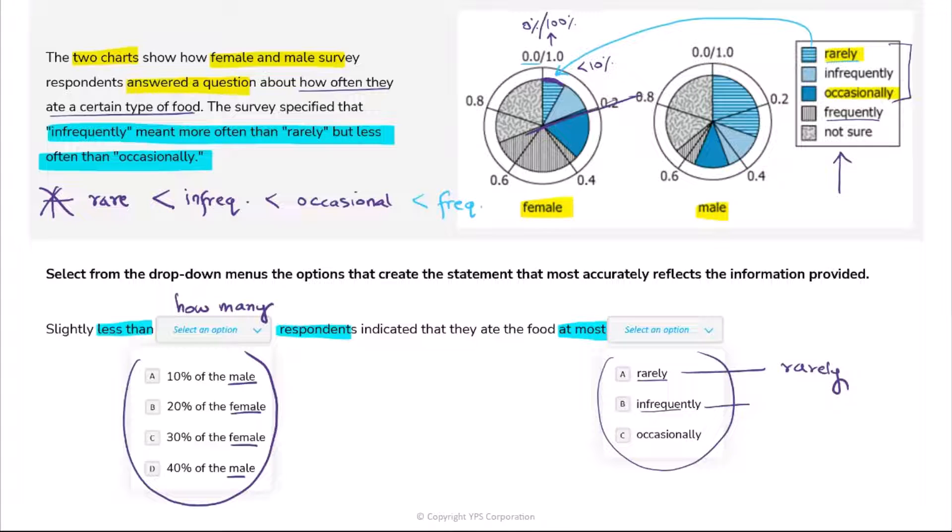When I say at most infrequently, you notice it's these first two together - then infrequent and below that, which means at most infrequent means you include rare and infrequent. Well, if you think about at most occasionally, then this time you will go all the way from occasional to everything below it. So this will include rare plus infrequent plus occasional. So this is what my second blank will have.